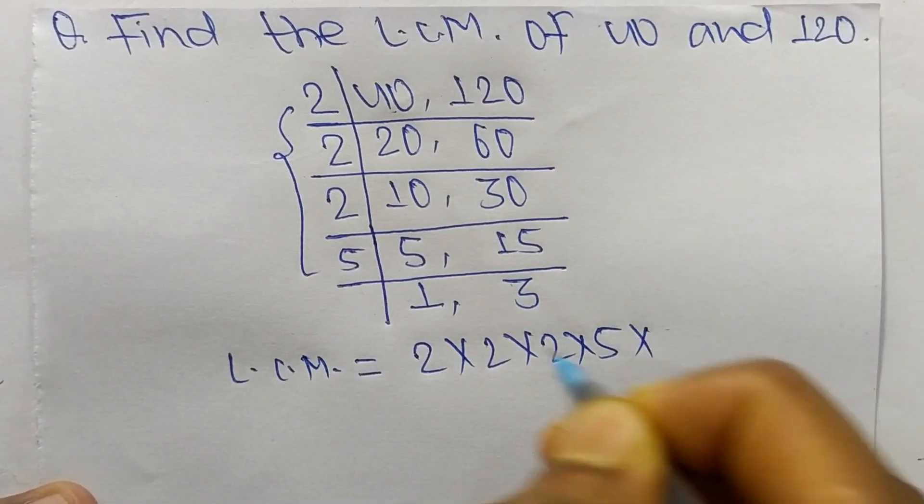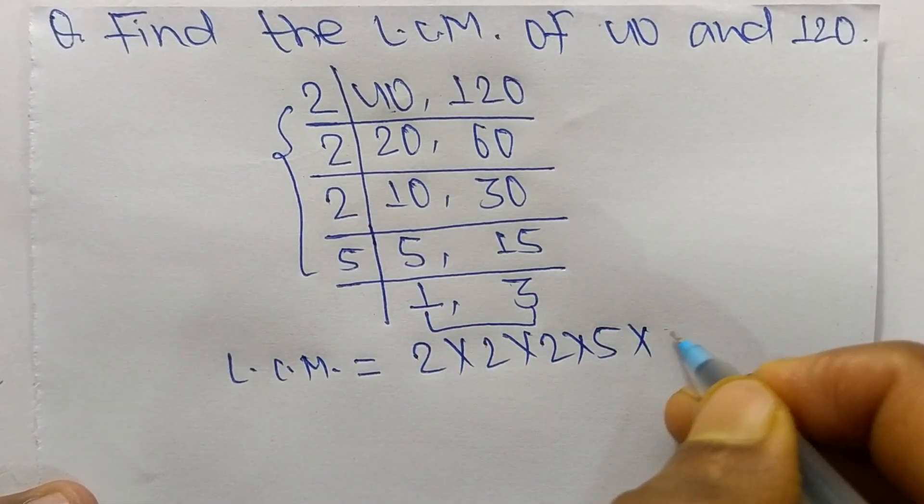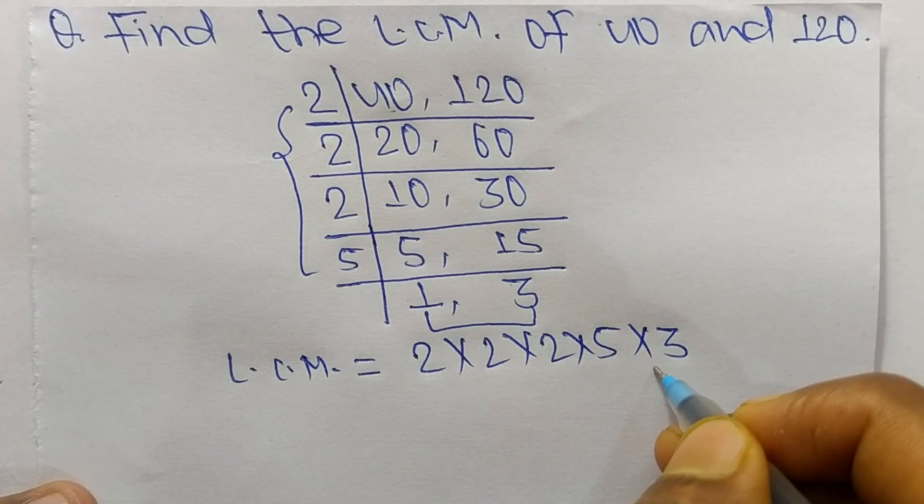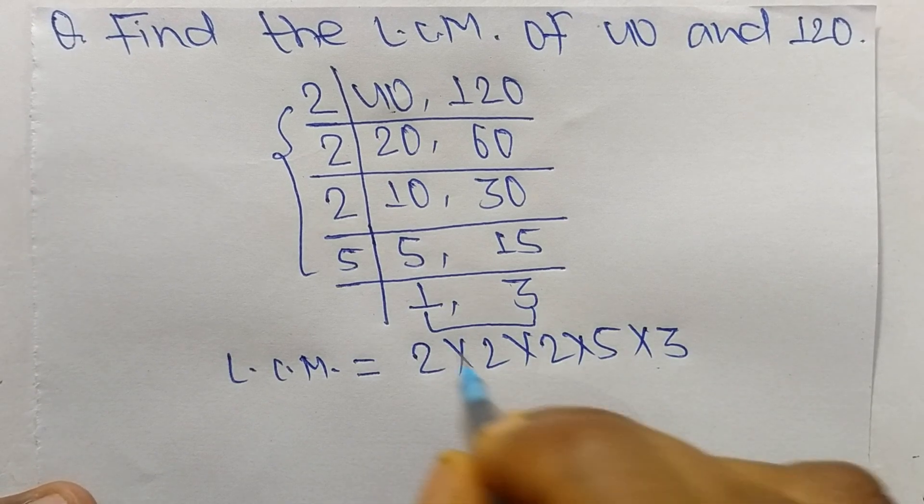And from this part we have 1 and 3, but we take here only 3 and we neglect 1. Because by multiplying any number with 1 we get the same result, so we can neglect 1.